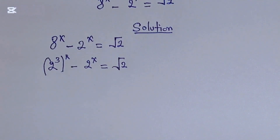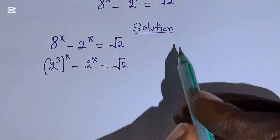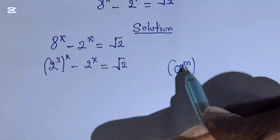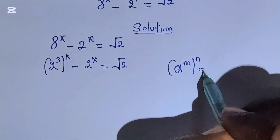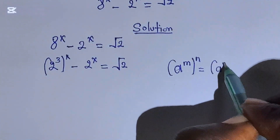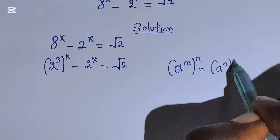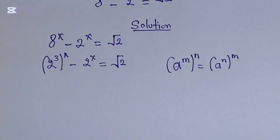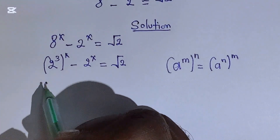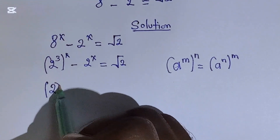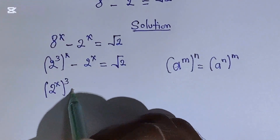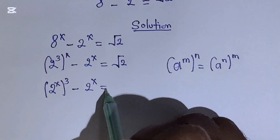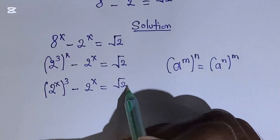Here we are going to apply this rule of indices which says that a to the power of m, then to the power n, is equal to a to the power of m times n. Which means here we will interchange this to get 2 to the power of x times 3, minus 2 to the power of x, which is equal to square root of 2.